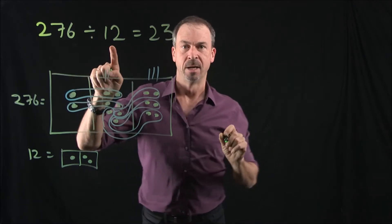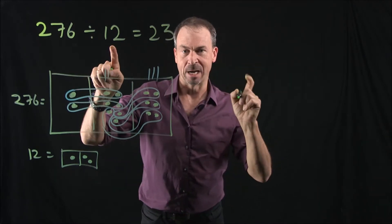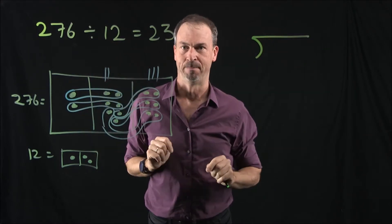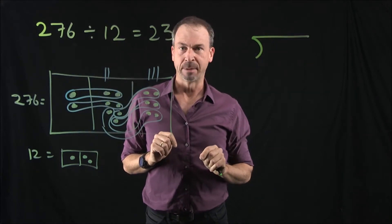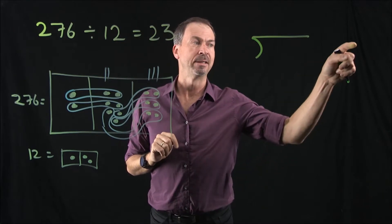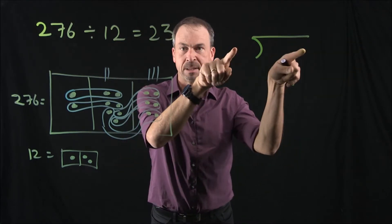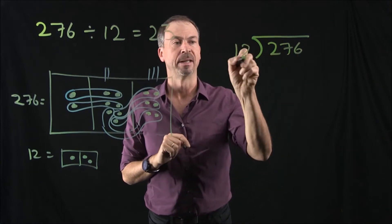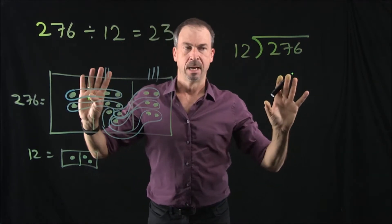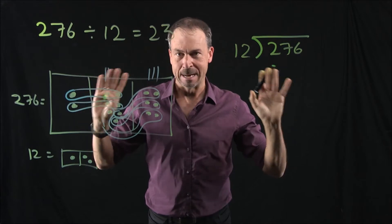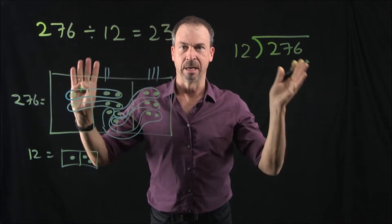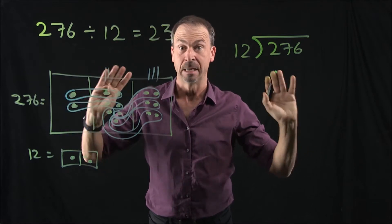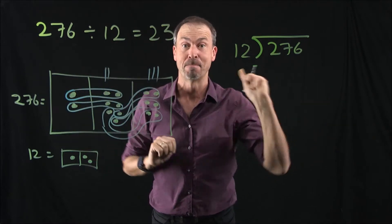So 276 divided by 12. Back in Australia, we had to draw a funny curve shape with a bar on top. I know some countries do it differently — they might write 276 colon 12 — but we had to draw this symbol and write the big number 276 under it and the 12 to the left of it. Now, remember how everything in math class is right to left? It's always right to left, which I thought was strange as a kid because I was being taught to read left to right in every other class except mathematics.